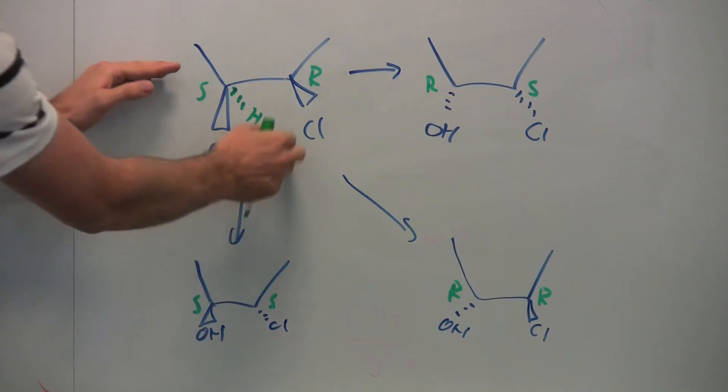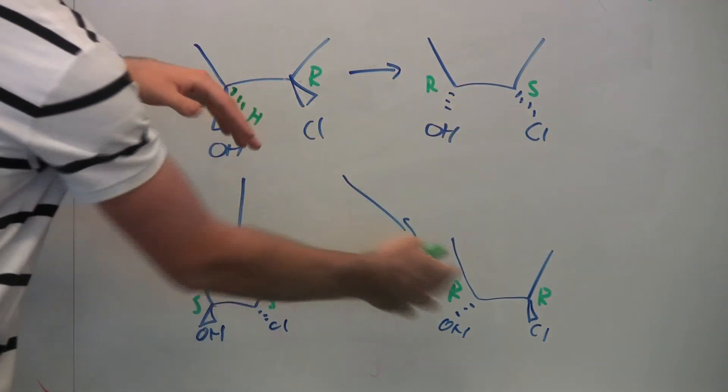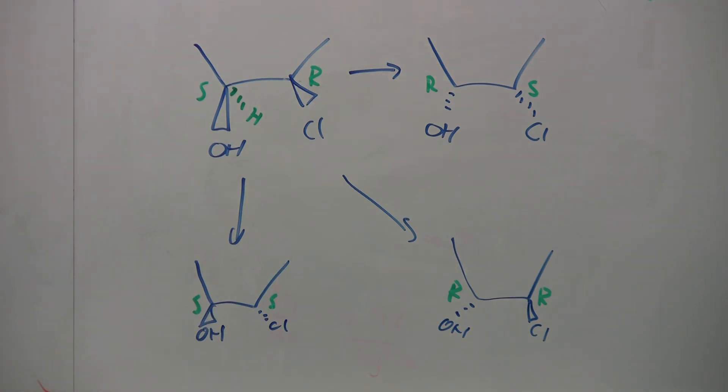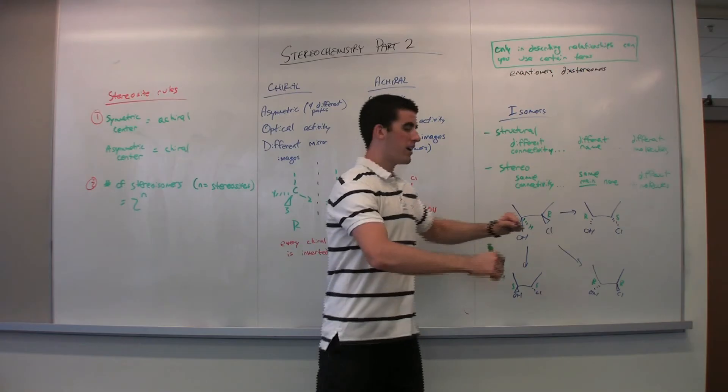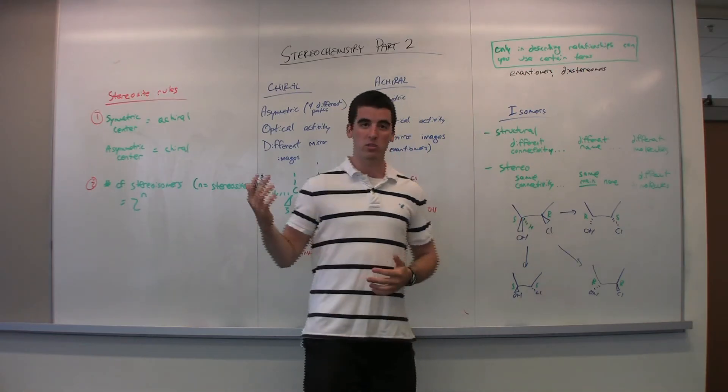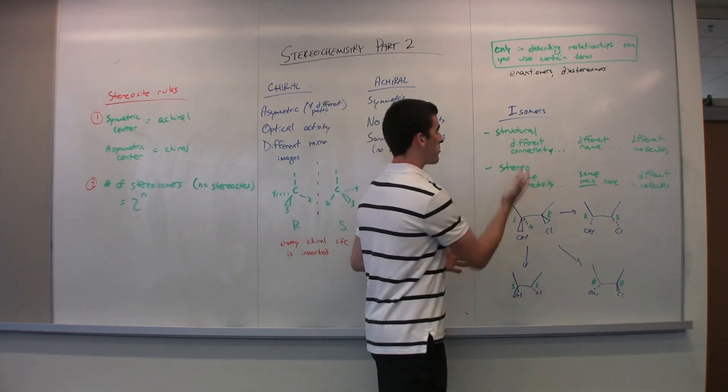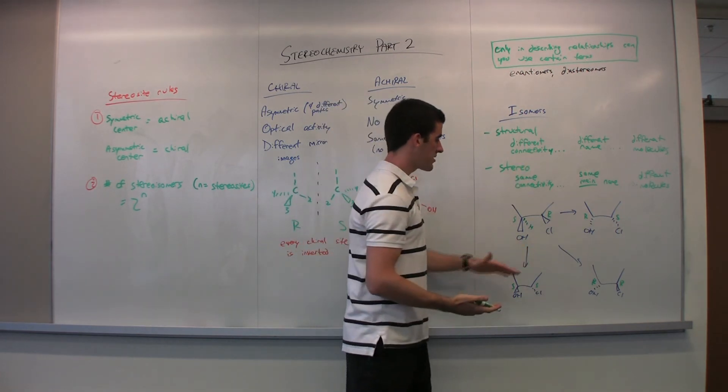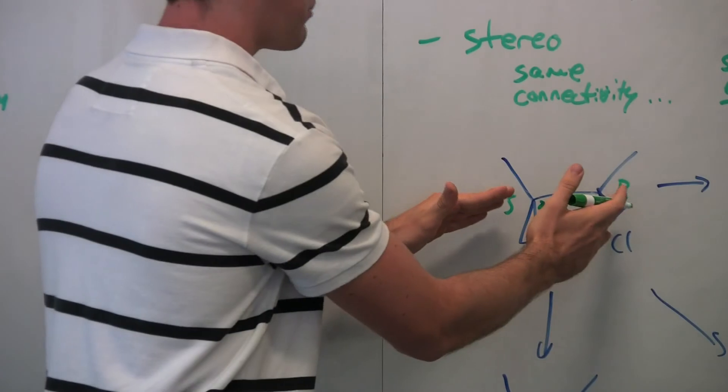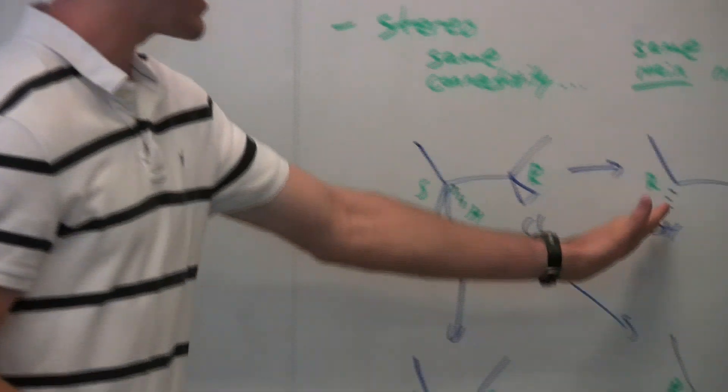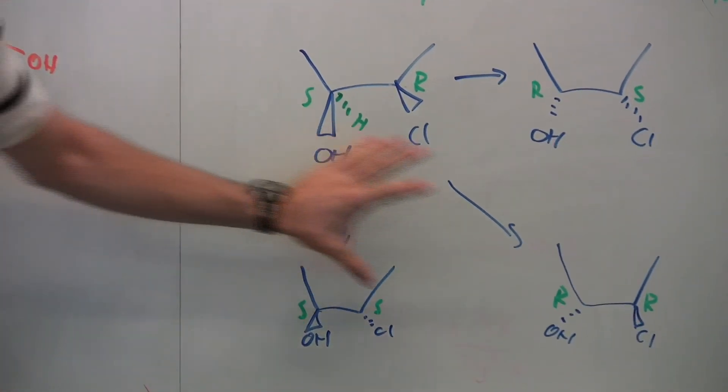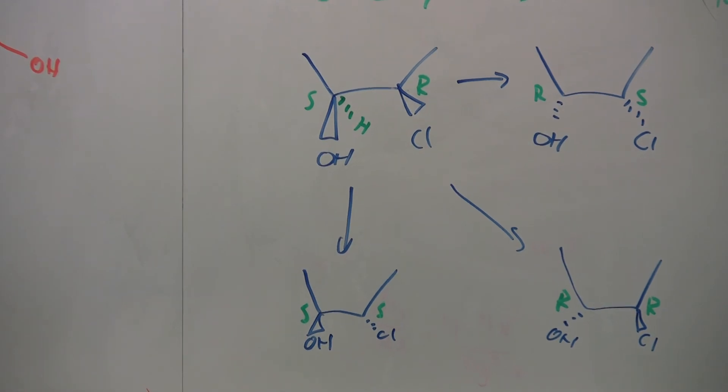So with our reference molecule here, we have two pairs of enantiomers, two pairs of diastereomers for a total of four stereoisomers. Again, that's confirmed by the 2 to the N rule here. And then the relationships enantiomers and diastereomers are confirmed because we have the complete opposite of this molecule here is the enantiomer. And then changing just one stereosite leads us to the diastereomer.